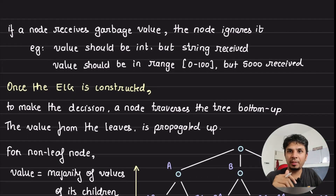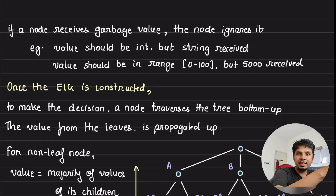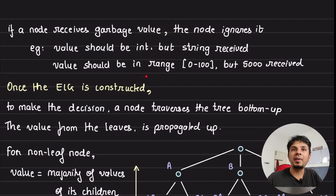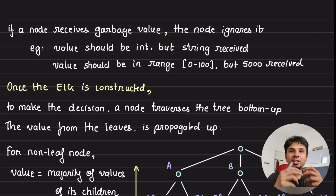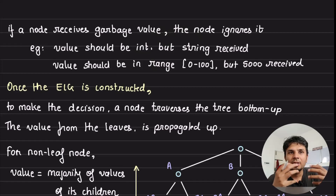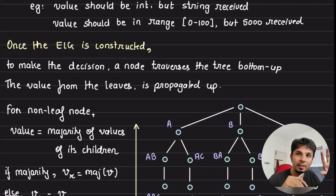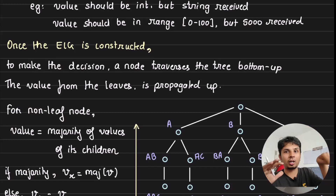While exchanging this information, at every round every node sends its information to every other node of the previous layer. If a node receives a garbage value, it ignores it. For example, if the value should be an integer but a string is received, it is discarded and put as null in the tree. If a value should be in the range 0 to 100 and 5000 is received, that is a basic sanity check — a malicious node might send garbage, so you simply throw out any random value received. Once the entire EIG tree is constructed, every node will have it filled with values received across multiple communication paths.